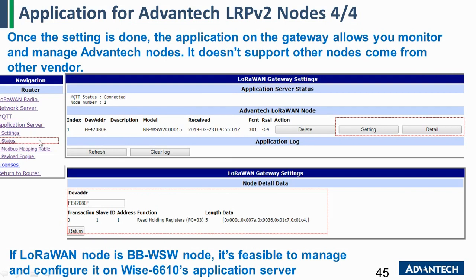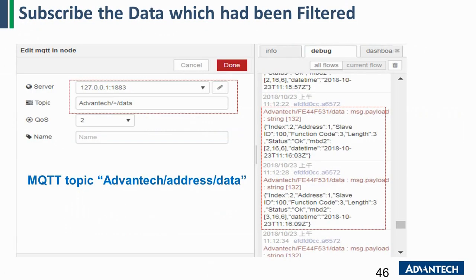Under the status page, not only can you check the information, but you can also configure the node from this application server page. For the BB-WSW node, because we have already assigned the ABP argument, you can receive data that has already been classified. Subscribe to this MQTT topic and you will see the classified data. In this example, we have already received the Modbus data, and it has been classified and displayed here.